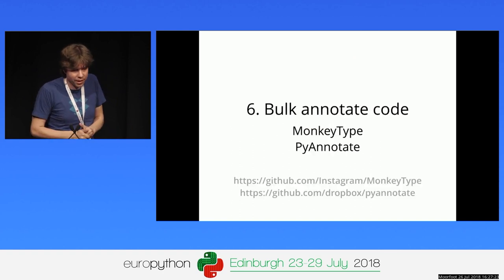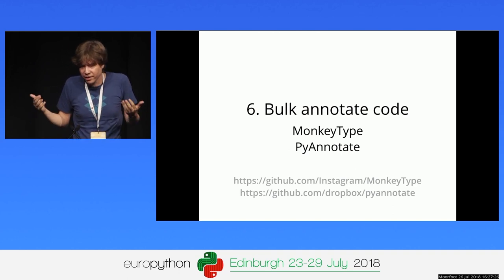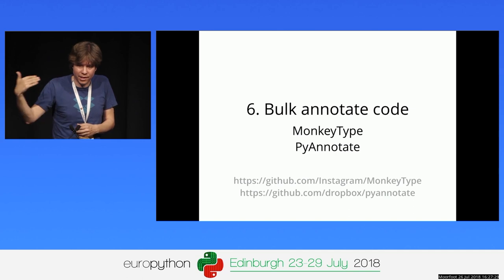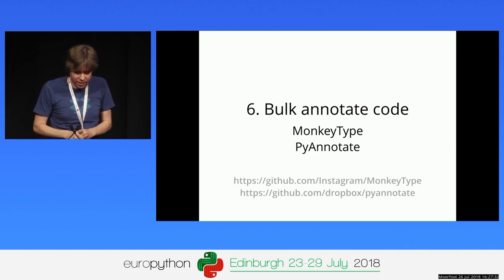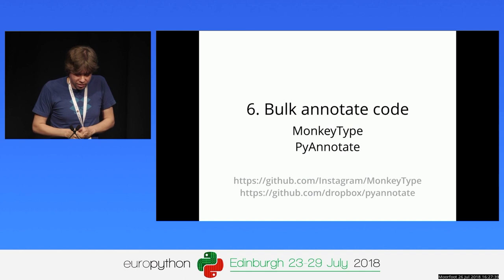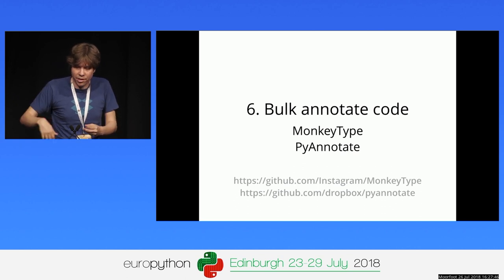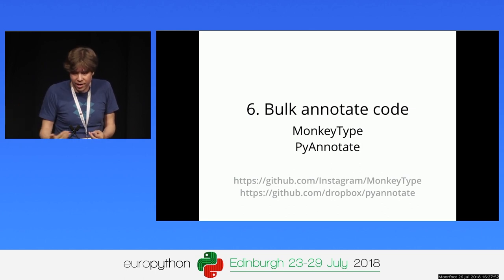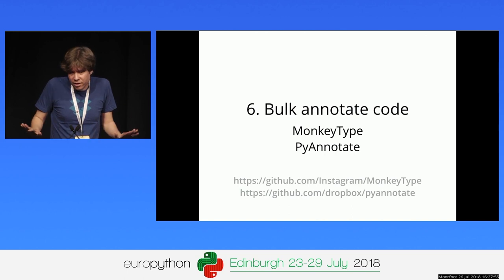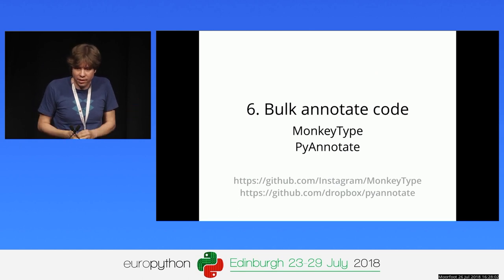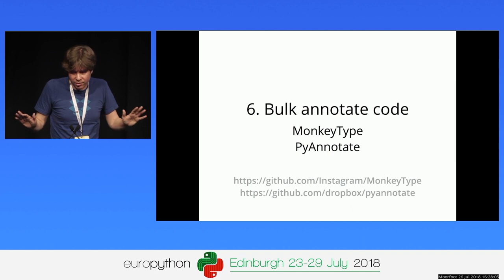At some point, look at your legacy code and start annotating it, since unannotated code leaks imprecise types into the rest of your code base. You can do it manually, or use tools like MonkeyType and pyannotate, which collect types at runtime — for example by running your tests — and generate draft annotations. They aren't 100% correct but you can manually tweak them to annotate a lot of code with less effort.